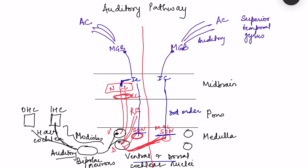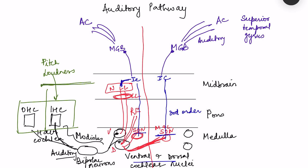Now let us see what is going on at different levels in the auditory pathway. In the cochlea, the inner hair cells perform discrimination between pitch and loudness. Along the length of the cochlea, fibers respond to different pitches — at the base of the cochlea fibers respond to higher pitch, and at the apex they respond to lower pitch. So at the level of the cochlea itself, coding for pitch and loudness of sound begins.